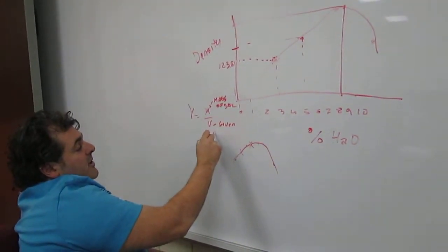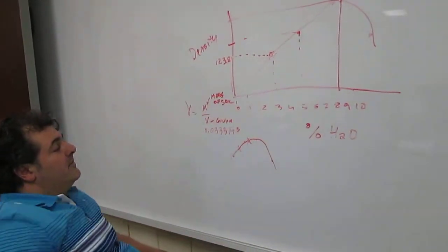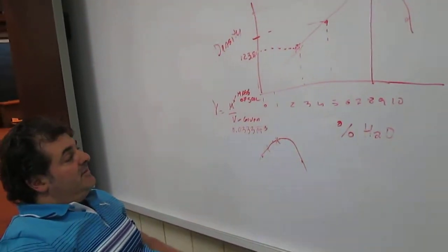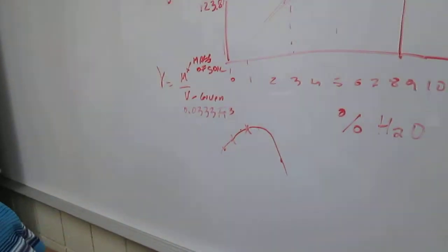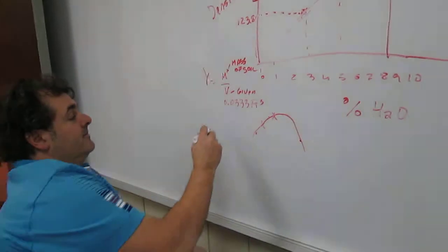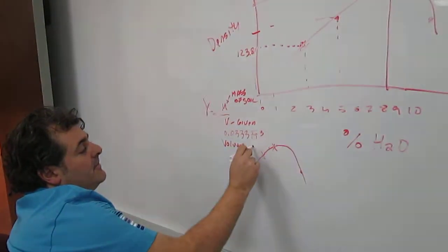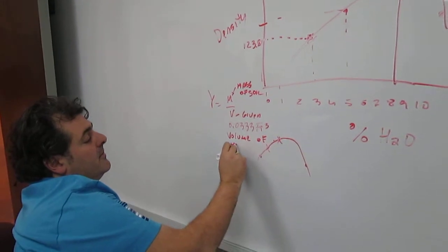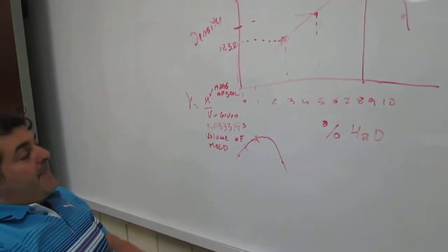And this was 0.0333 cubic feet. What's the 0.0333? That's the volume of the mold. The metal mold, the cylinder.